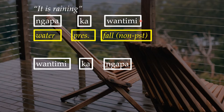Because the word order is free, you can also say 'Wondemi Ga Ngapa,' which means 'falling is water' — literally that. In Walbiri, because the sentence structure and word order is so flexible, you can rearrange any word in any way you like and it still makes sense, except that the word Ga usually stays in the second position. So the second word is always Ga, usually.